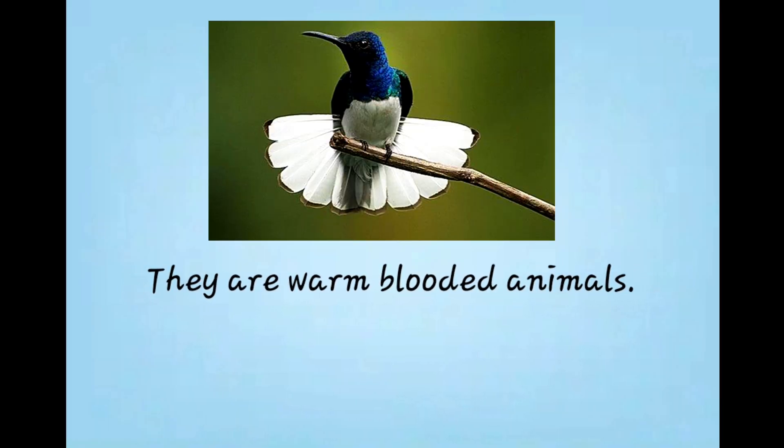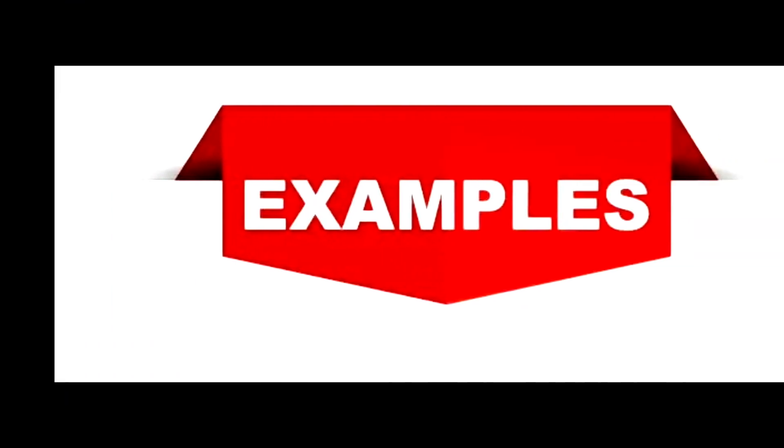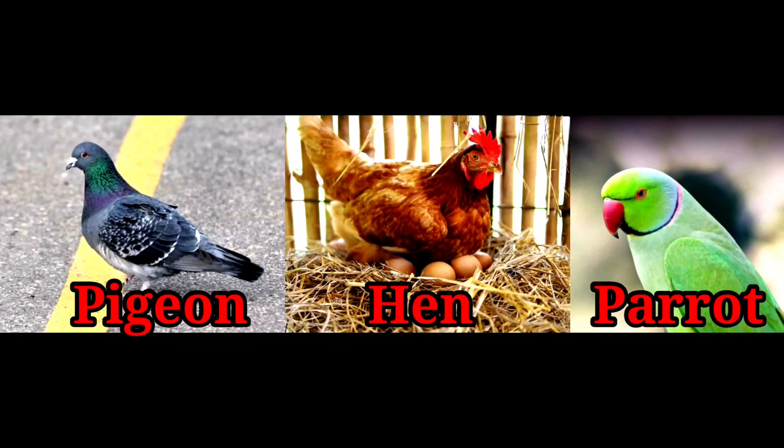They are warm-blooded animals. Some examples of Class Aves are pigeon, hen, and parrot.